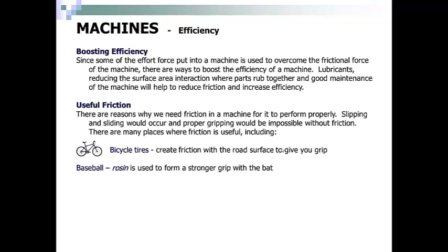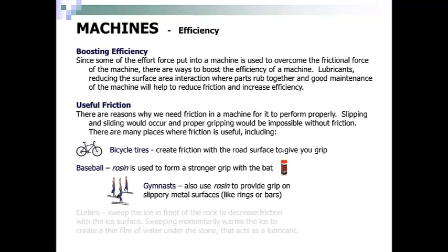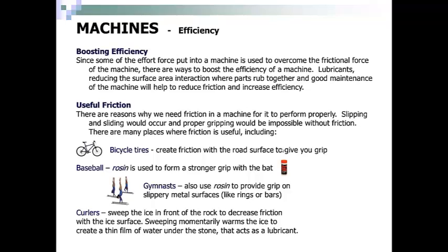In baseball, players use rosin to form a stronger grip with the bat. Gymnasts also use rosin to provide grip on slippery metal surfaces like rings or bars. Curlers sweep ice in front of the rock to decrease friction over the ice surfaces. Sweeping momentarily warms the ice to create a thin layer of water under the stone, which acts as a lubricant.